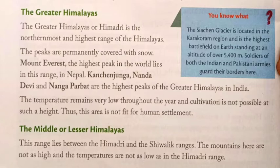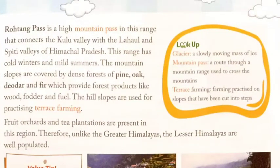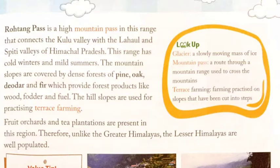The Middle or Lesser Himalayas — this range lies between the Himadri and the Shivalik range. The mountains here are not as high and the temperatures are not as low as in the Himadri range. Rohtang Pass is a high mountain pass in this range that connects the Kullu Valley with the Lahaul and Spiti valleys of Himachal Pradesh. This range has cold winters and mild summers. The mountain slopes are covered by dense forests of pine, oak, deodar and fir, which provide forest products like wood, fodder and fuel. The hill slopes are used for practicing terrace farming.